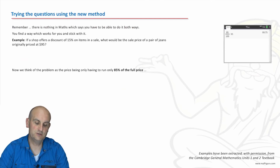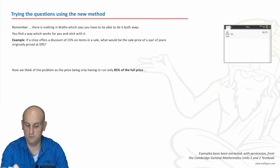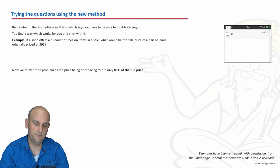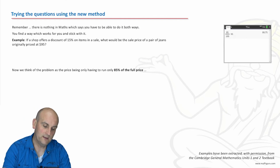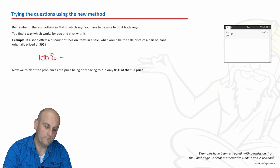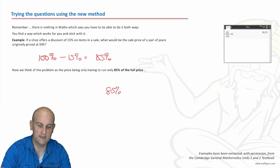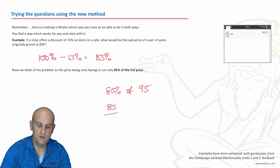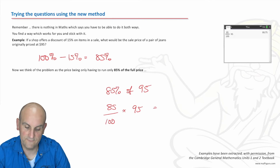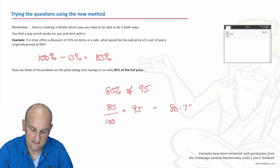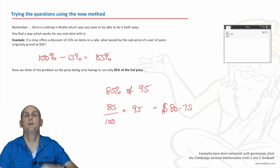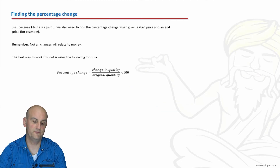Last question — let's check those jeans. The shop offers a discount of 15%. My jeans started at 100%, I've discounted by 15%, which gives me 85% of what I started with. So 85% of $95: 85 divided by 100 times 95 gives me $80.75. I much prefer doing it that way.